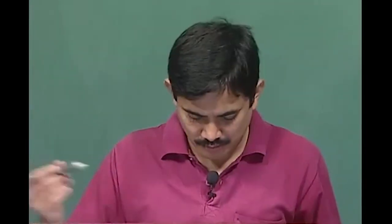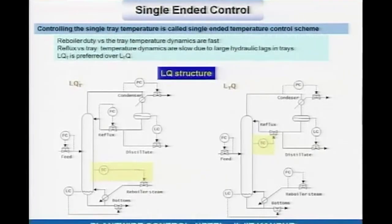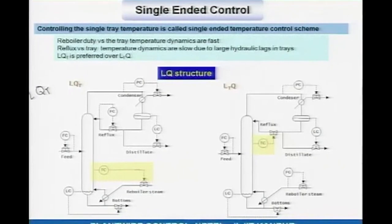Of course, composition measurements from quality assurance labs also have a role to play, but we will not go into that now. Degrees of freedom is 2. I could have one of the tray temperatures adjusting one of those degrees of freedom. For example, with an LQ basic structure, I can use Q to control a tray temperature, fix the reflux at a reasonably high value so that heavy key does not end up in the distillate even for the worst-case disturbance, and then adjust Q to hold a stripping tray temperature constant. This is the LQT structure.